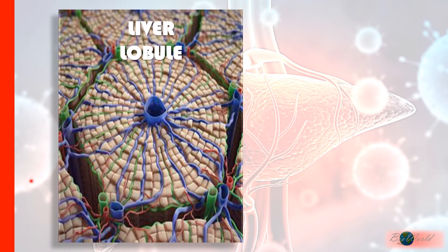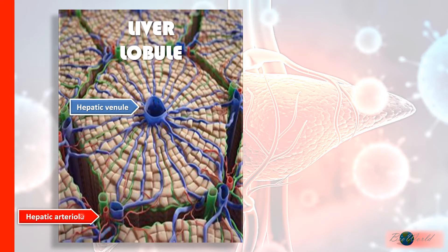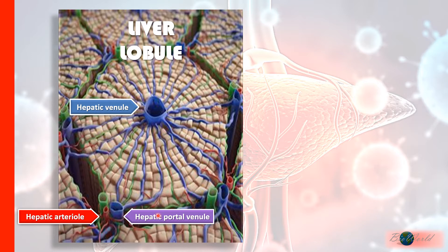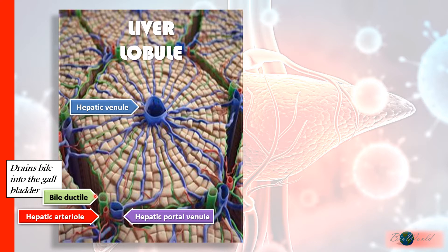I'll use a 3D model to describe the components of the acinus so that it's easier to picture. The center is the hepatic venule, a branch of the hepatic vein. On the far end, you see three vessels: the hepatic arteriole, which is a branch of the hepatic artery; the hepatic portal venule, a branch of the hepatic portal vein; and the bile ductile. The bile ductile drains and transports bile from the liver cells into the gallbladder for storage.